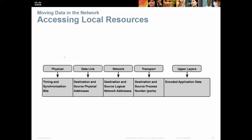When we access local resources — talking about the physical, data link, network, transport, and upper layers — the physical layer handles timing and sync bits. The data link is the destination and source physical address, which is the MAC address — the machine address code. The network layer has the destination and source logical network address, which is typically an IP address — IPv4 or IPv6. The transport layer handles destination and source ports: port 80 for web, port 443 for secure. The upper layers carry encoded application data, such as Outlook for email or Chrome and Firefox for web browsing.